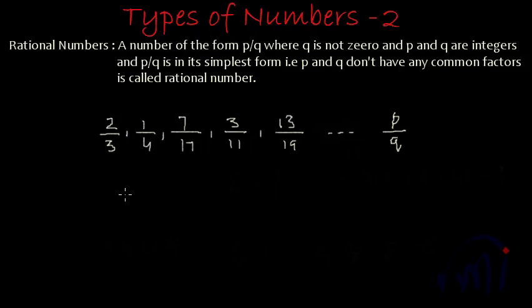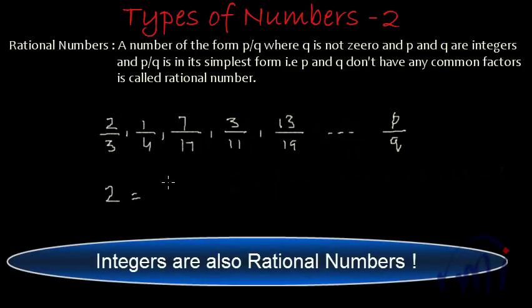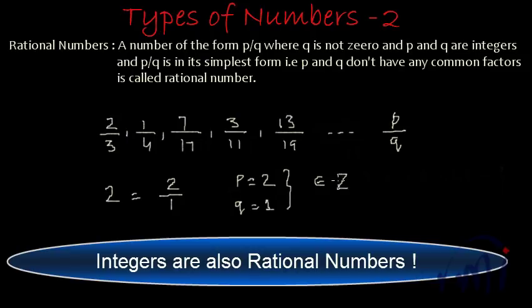Now the question is, are integers also rational numbers? Yes — 2 can be represented as 2 by 1, where P is equal to 2 and Q is equal to 1, and both of them belong to the set of integers. So 2 is also a rational number. Similarly, any integer, any natural number, or any whole number can all be represented in this form.